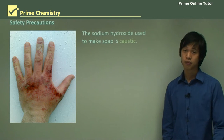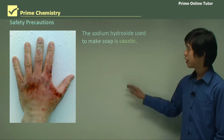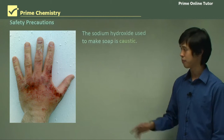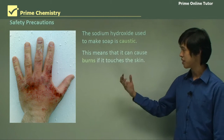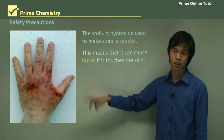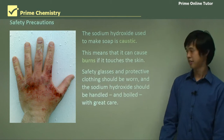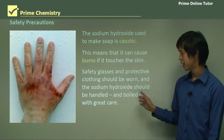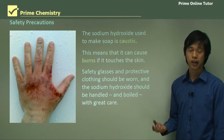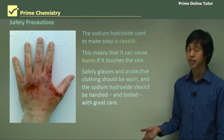Now, safety. When you do this in your lab, you have to be aware of safety. Sodium hydroxide is very caustic, so it burns and can cause burns if it touches the skin. You can see here the effects of sodium hydroxide on skin. Safety glasses and protective clothing need to be worn, and the sodium hydroxide should be handled and boiled with great care, because it is very dangerous.